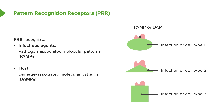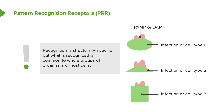These receptors can be present on the cell surface or sometimes inside cells, and may be on pathogen cells or on our own body cells. It is important to appreciate that although this recognition is often described as broadly specific, what is actually being recognized is recognized in a very, very highly specific way.